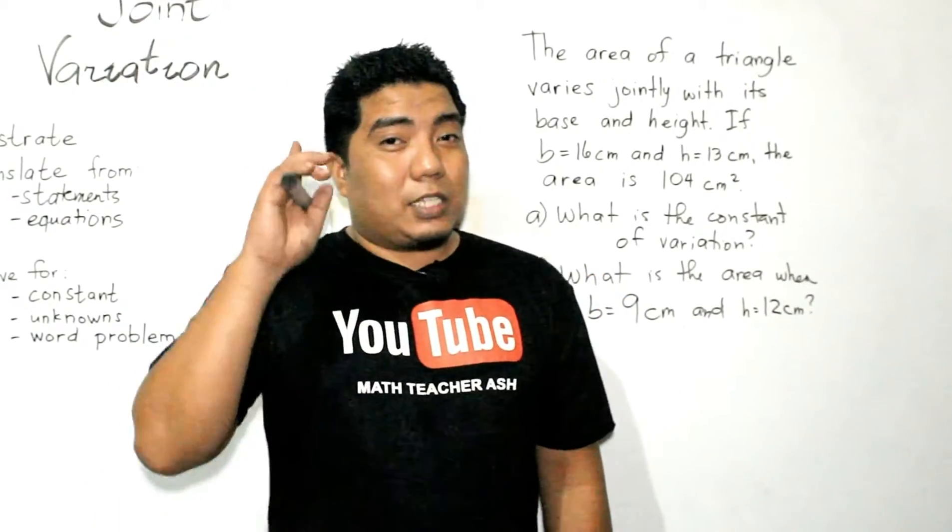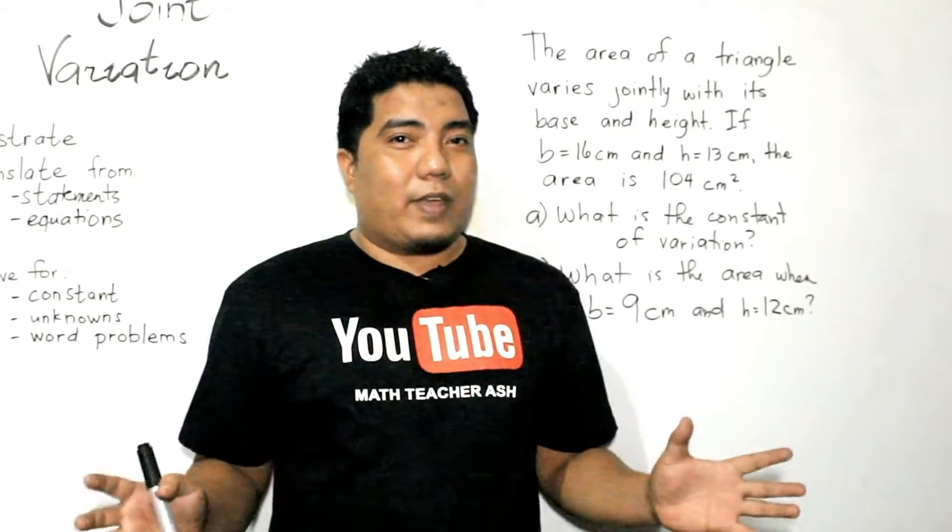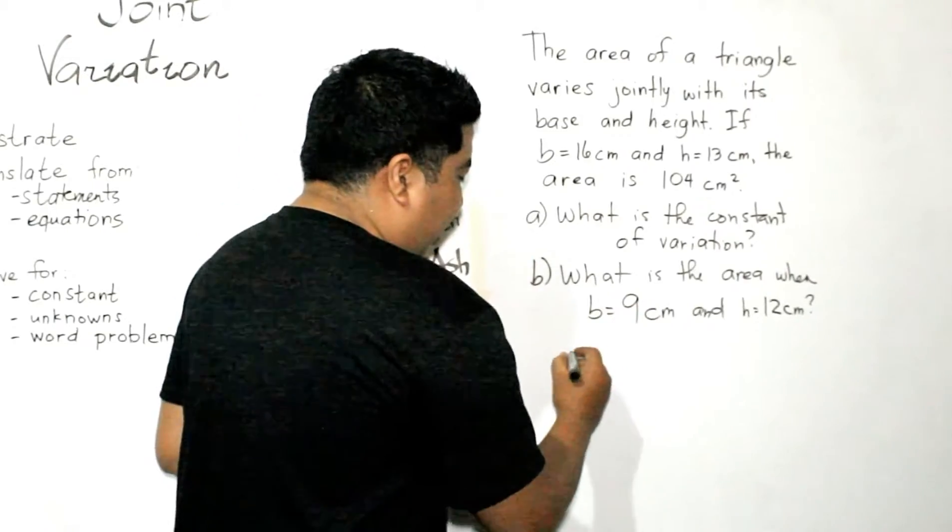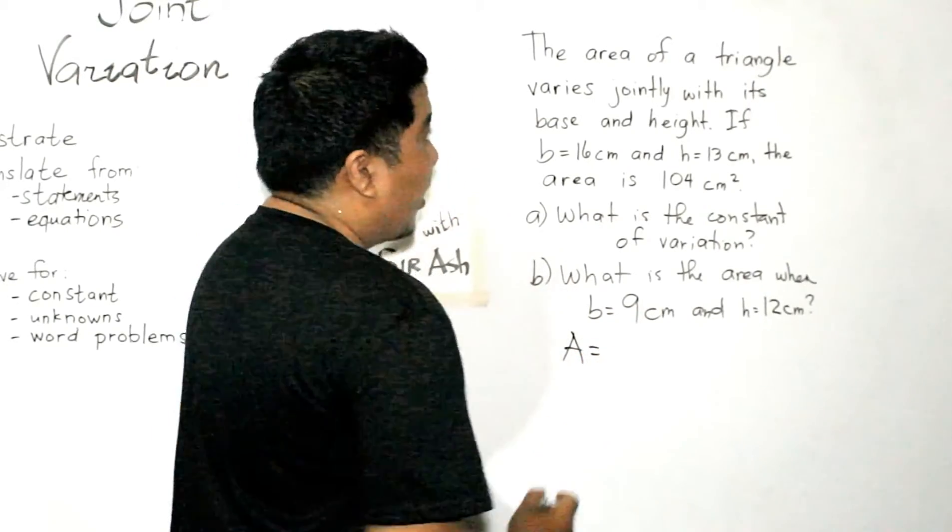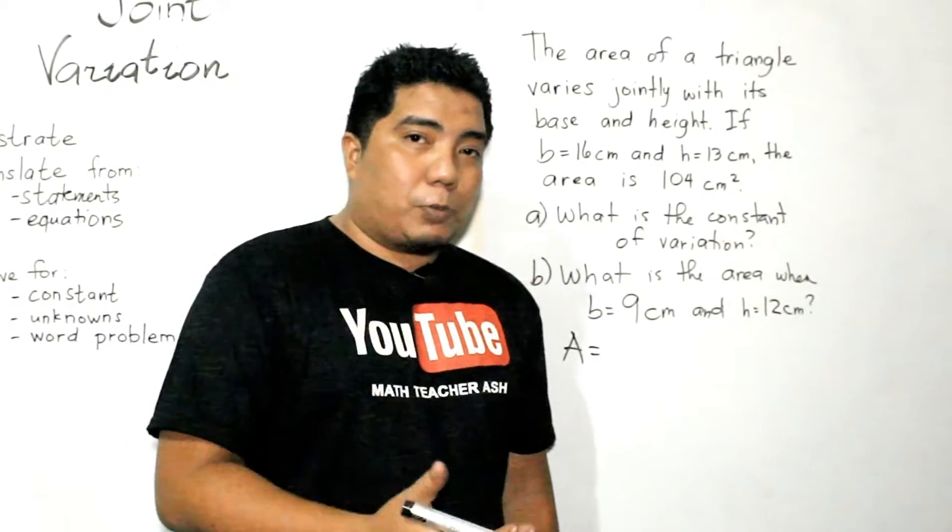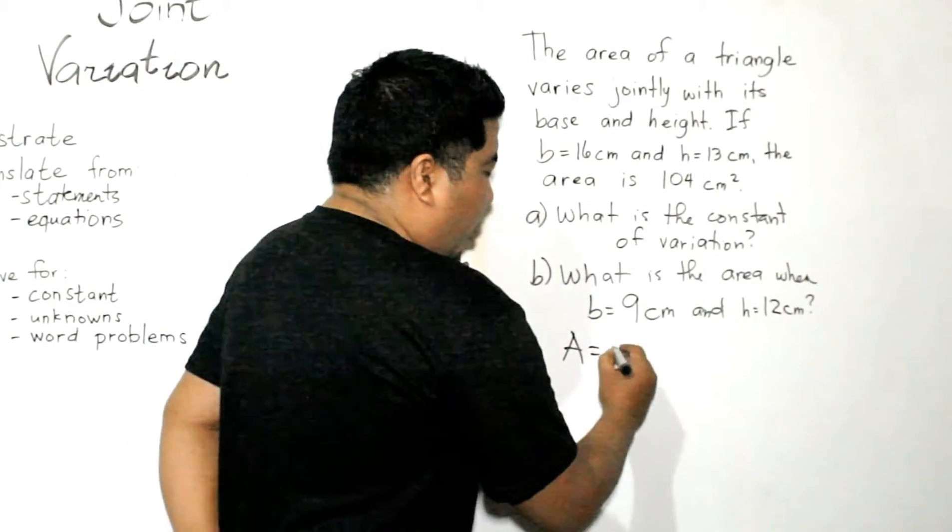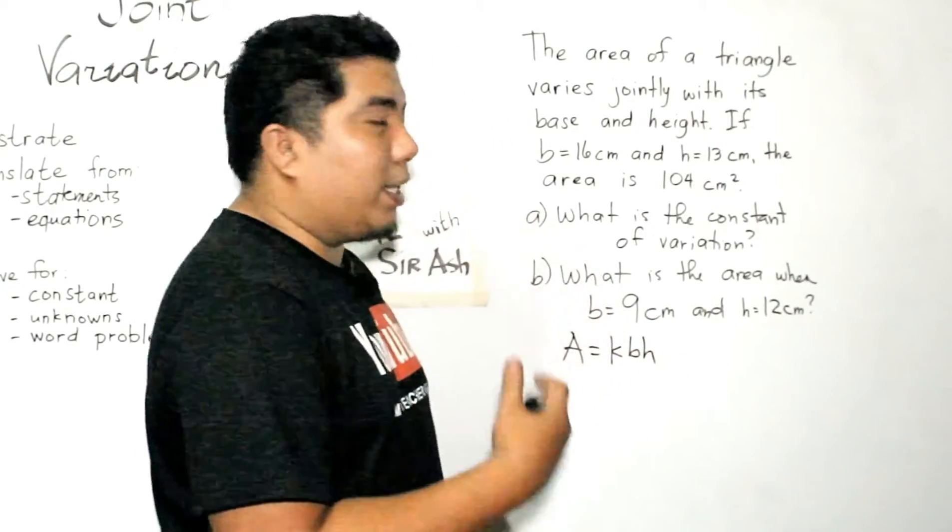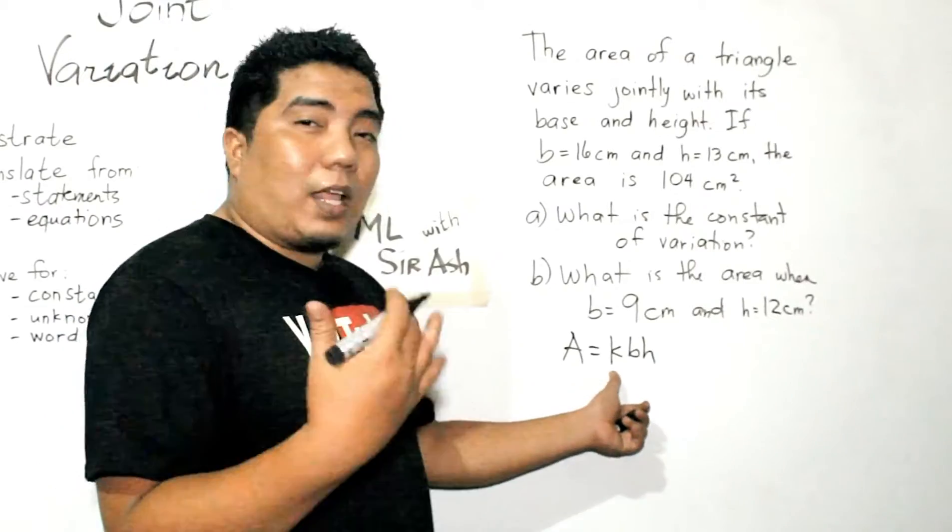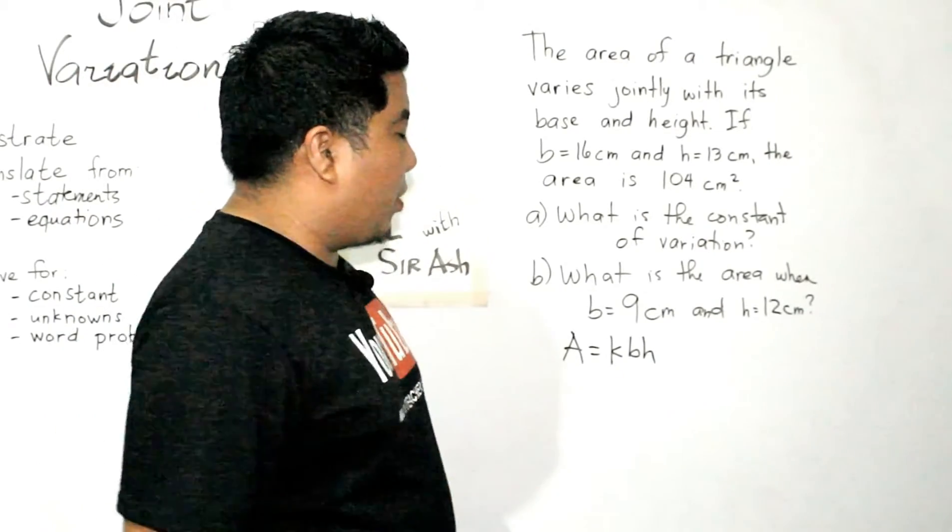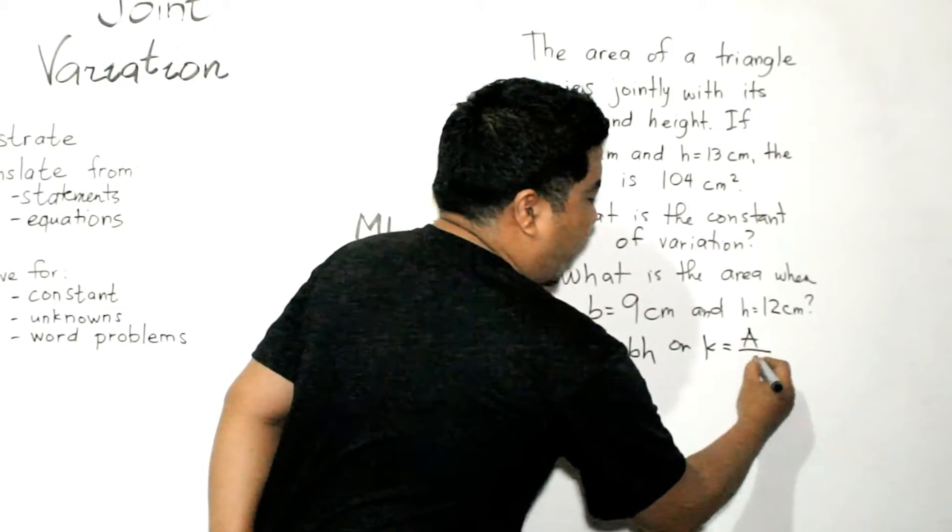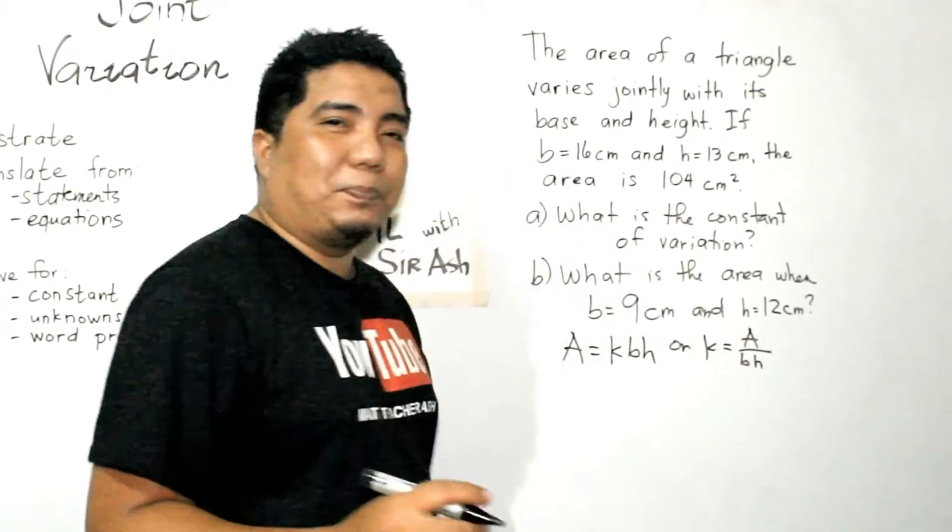Okay, the first thing you need to do is translate your given statement. The first statement is, the area of a triangle. So, area, that is A, varies jointly with its base and height. So, for base, we use B. For height, we use H. So, that is KBH or K times B times H. So, that will be our translation given that our K is the constant of variation. Okay, so, by solving our K, that is area divided by base times height.